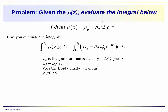So the problem is to evaluate this integral. We are given that ρ(z), we're given an analytic expression for ρ(z), would be the grain density here, or the matrix density, minus a Δρ, which would be the difference between the fluid density, which we're going to assume is just 1 gram per cubic centimeter, and the grain density, which we're going to assume is quartz, 2.67 grams per cubic centimeter. So we have Δρ up here.